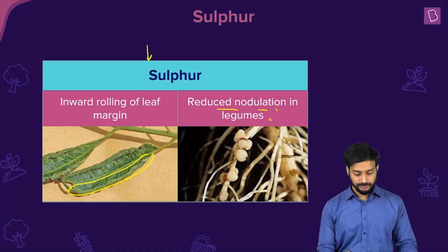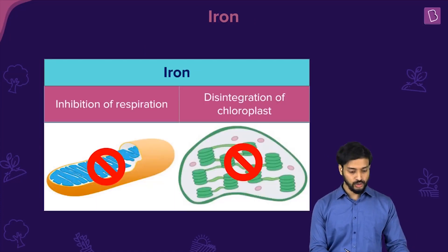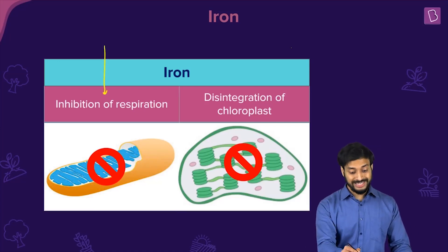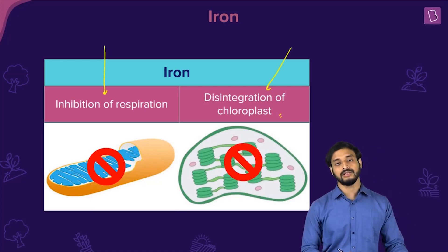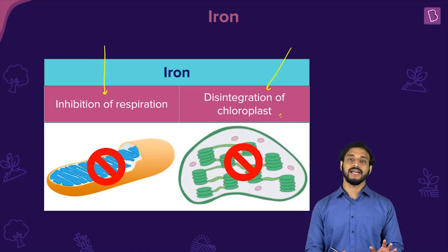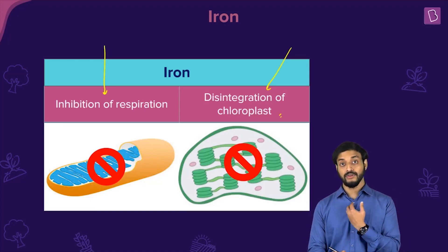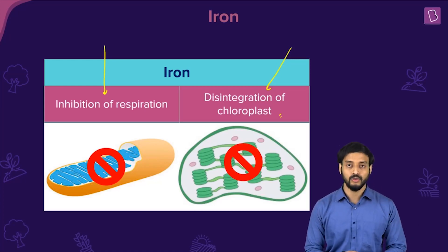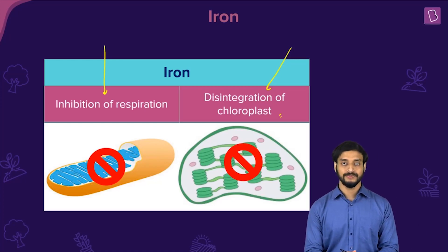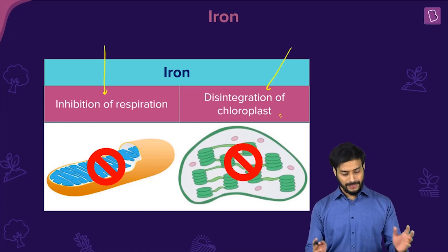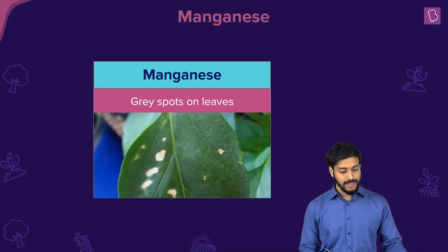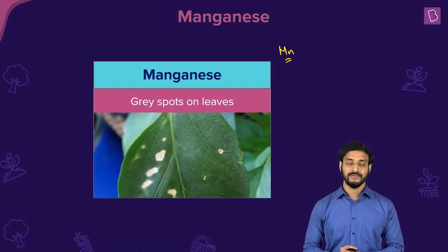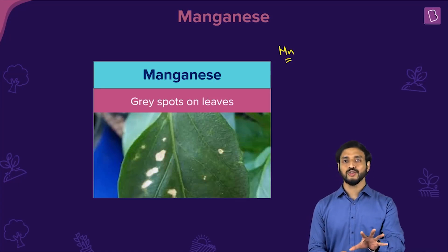Iron deficiency causes inhibition of respiration and disintegration of the chloroplast — both are very undesirable. Iron is essential for us too. These are the key deficiency symptoms for iron.